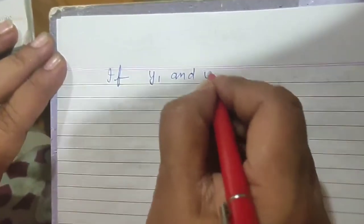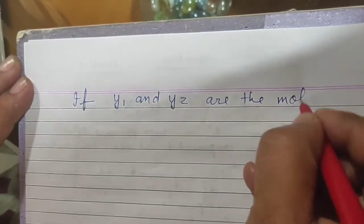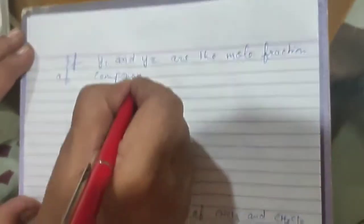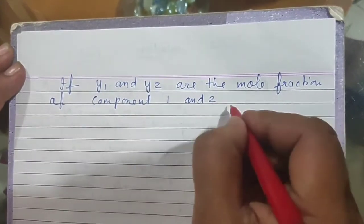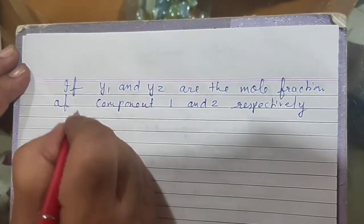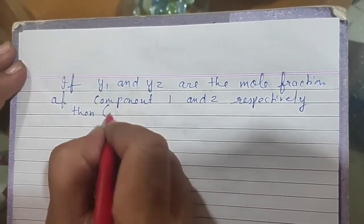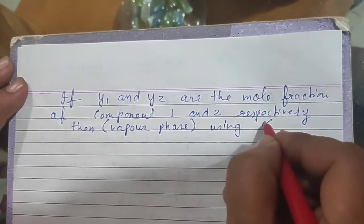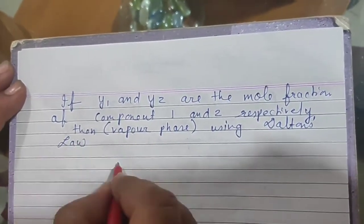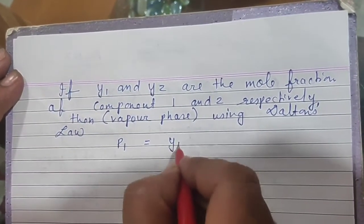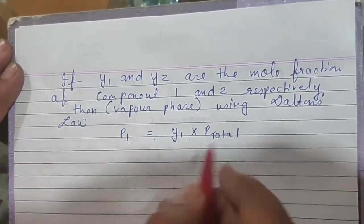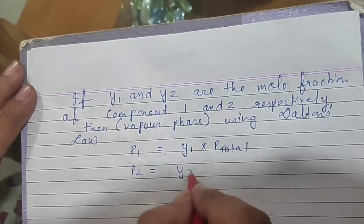If y1 and y2 are the mole fractions of component 1 and 2 respectively in the vapor phase, then using Dalton's law: P1 is equal to y1 into P_total, and P2 is equal to y2 into P_total.